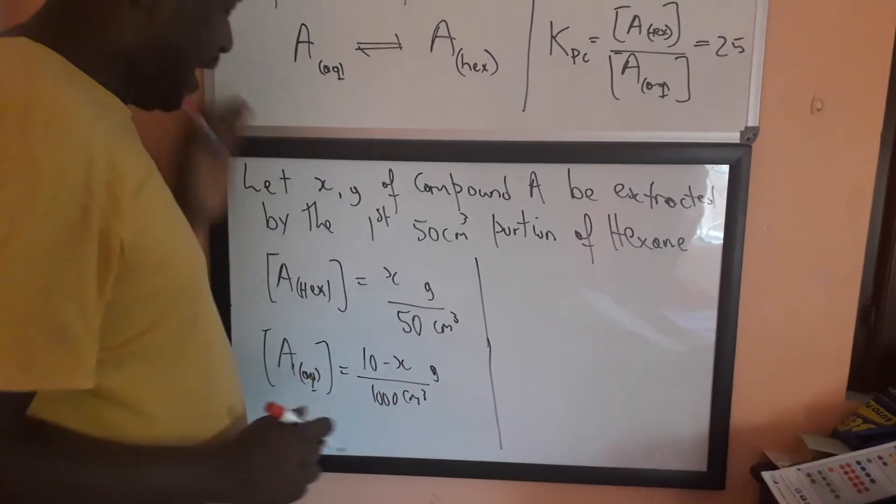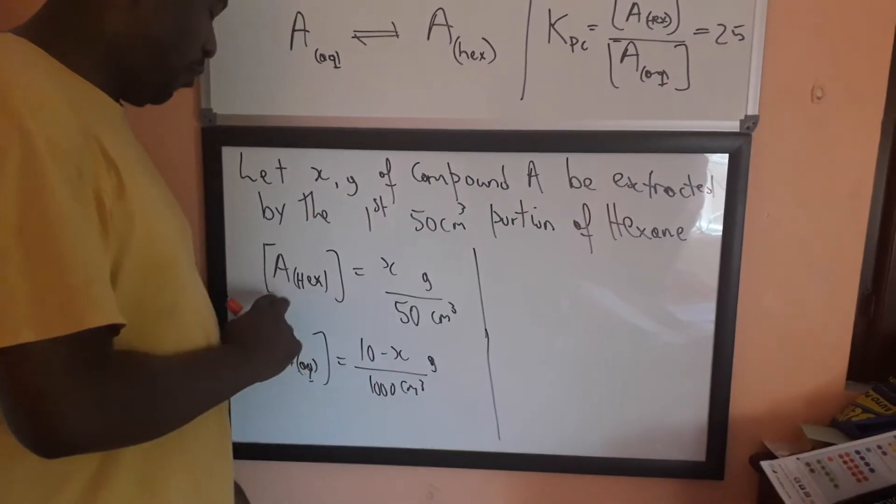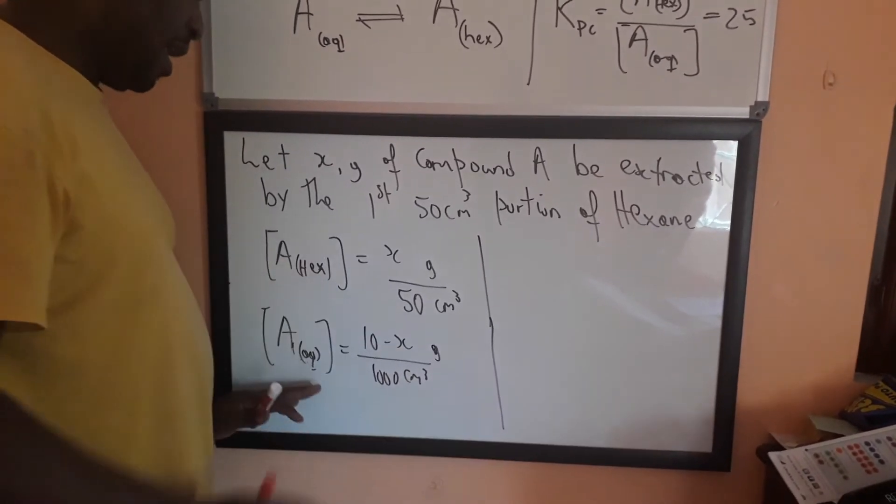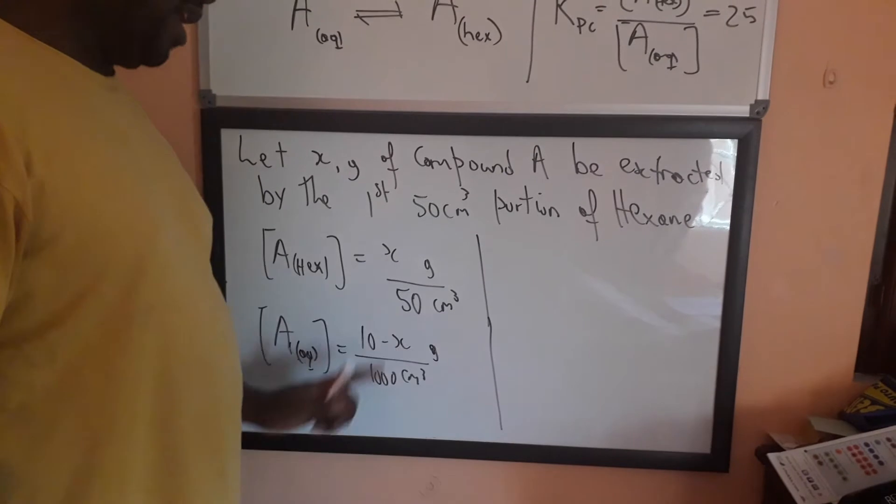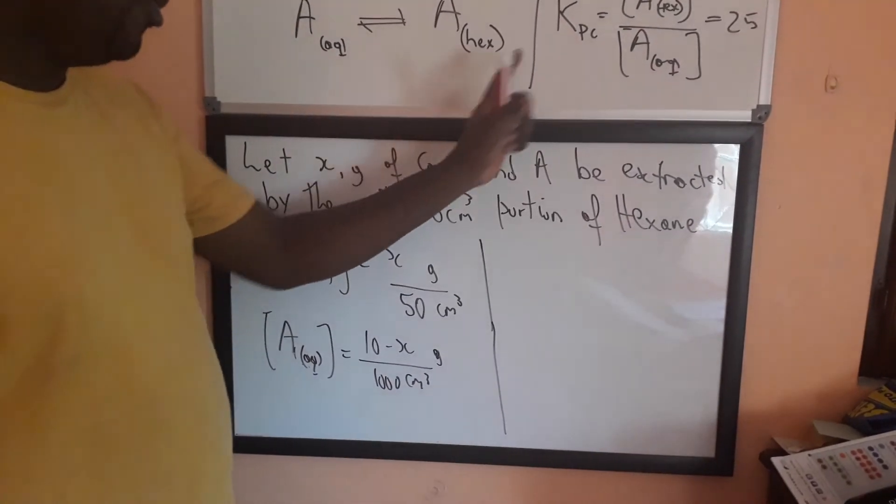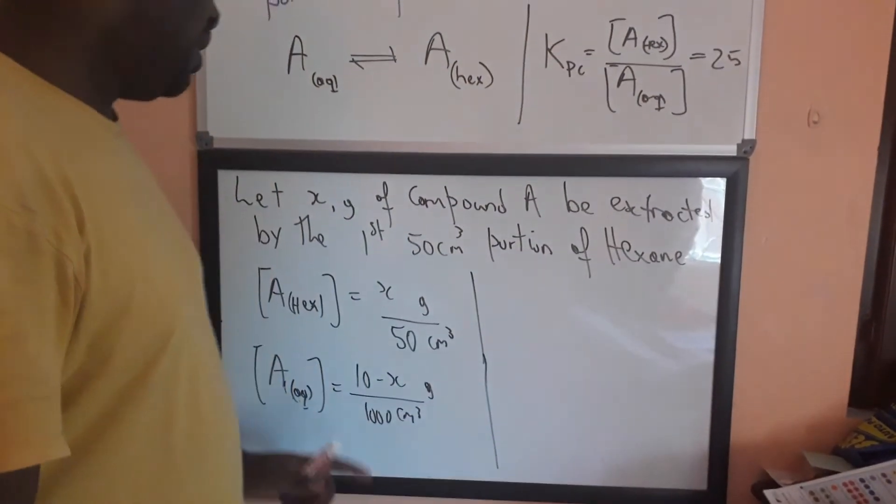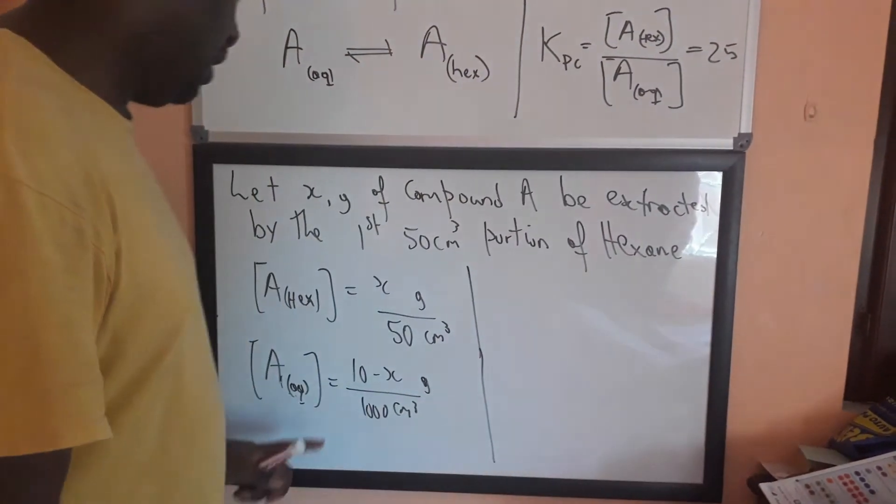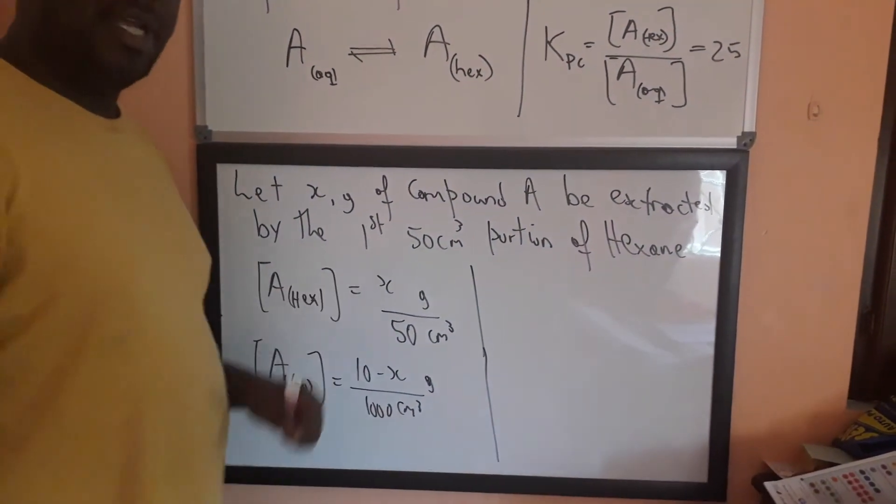And so, we have the concentrations of both, of compound A in both the hexane and in the water. At least, we have expressions. And, but we know KPC, so we can plug these values in, and then calculate the value of X.